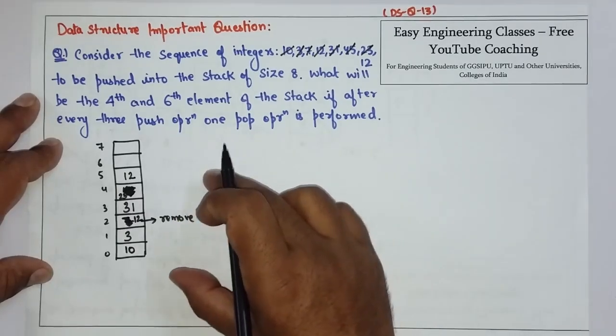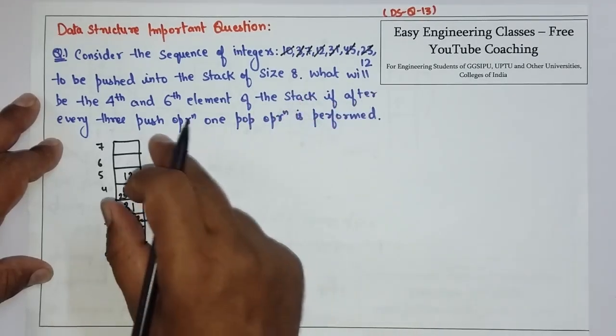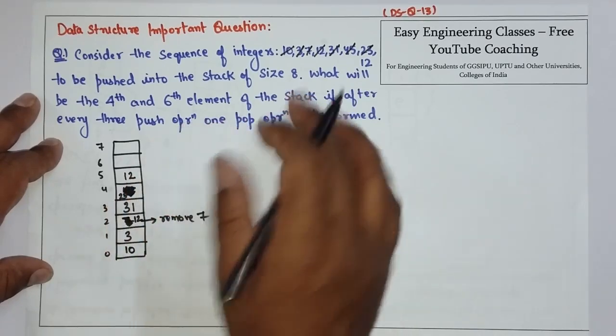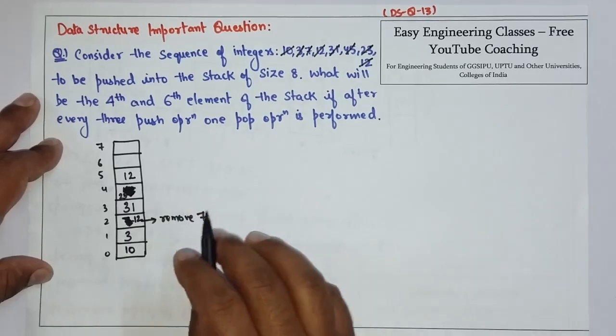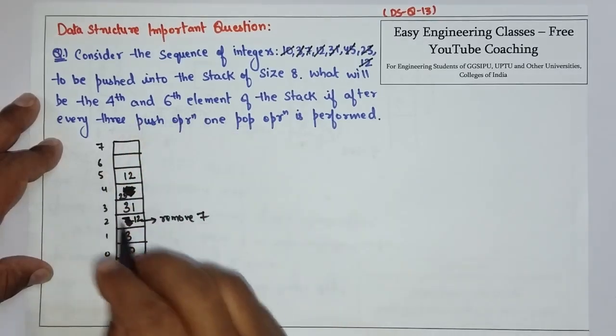So, now this is the stack after 3 push operations and 1 pop operation. And all the elements are completed. Now, we have to find the 4th and 6th element.